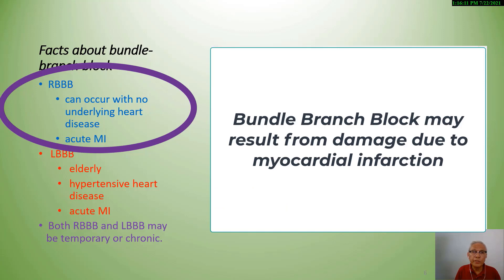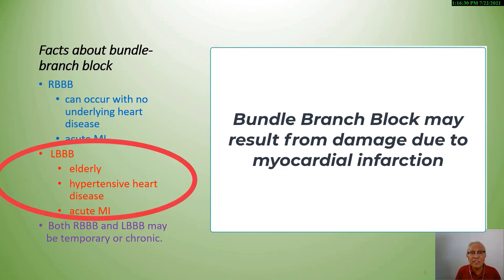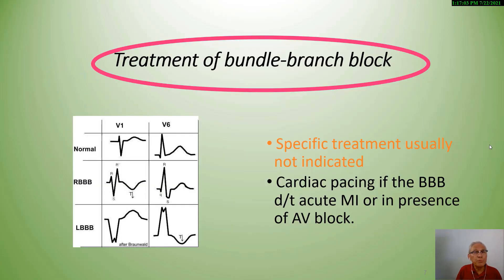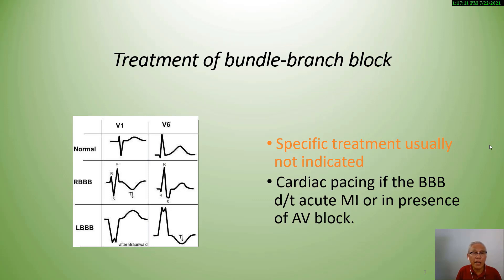Right bundle branch block can occur with no underlying heart disease, but it is also a finding that accompanies acute MI. Left bundle branch block is less common than right bundle branch block; it is usually associated with aging and will be manifest in the elderly, and is also present in hypertensive heart disease and as a complication of myocardial infarction. Both right and left bundle branch block may be temporary or chronic. There is no specific treatment for bundle branch block, but if it is accompanied by AV block, cardiac pacing might be necessary.